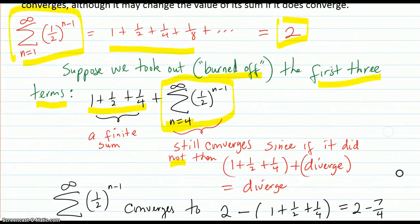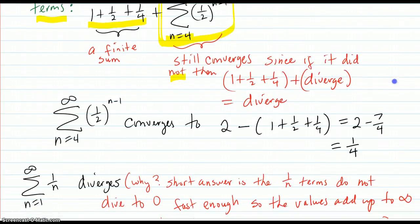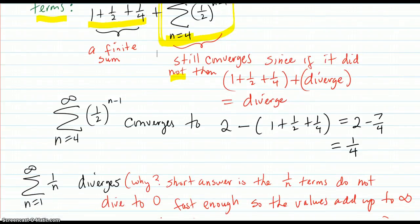Because we already know that this series converges. So this part here converges. And what does it converge to? It converges to two minus the stuff we took out, which is 7/4.